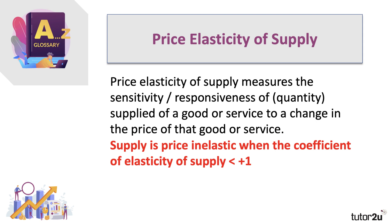Supply is said to be price inelastic when the coefficient of price elasticity of supply is less than plus one — for example, it could be plus 0.3 or plus 0.5.